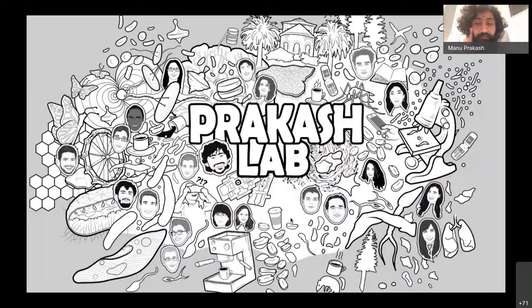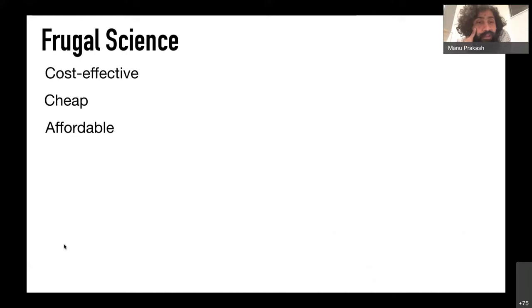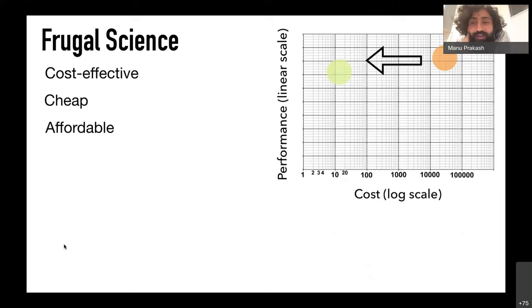I titled the talk 'Frugal Science.' First, this is my lab — I get a chance to work with many young students and postdocs and this is a joint effort with them. We are very scattered across science in some sense, and that empowers us to think in a very cross-disciplinary way. Let me define this term I often use: frugal science. I think of this in the context of affordability and access.